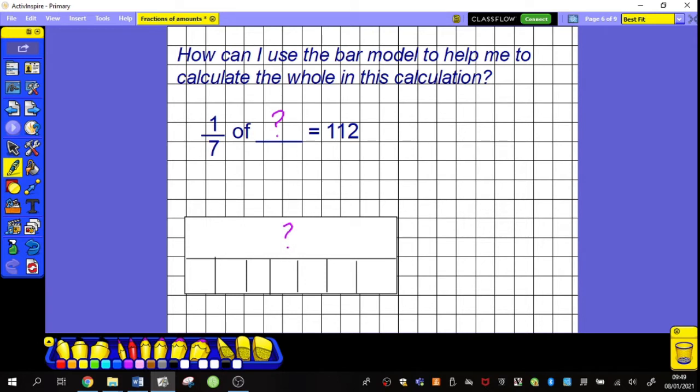What it is telling me is that one seventh must equal one hundred and twelve. In my bar model I've split it into sevens and one of these must be one hundred and twelve. I know they're not perfectly equal but the best I can do. In order to find the whole thing now, I'm going to take one of these parts and I'm going to multiply it by seven.